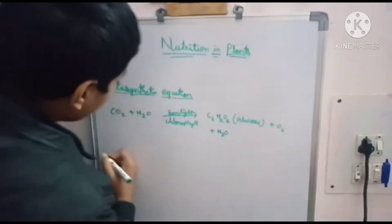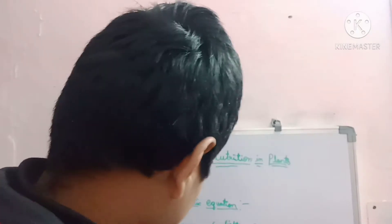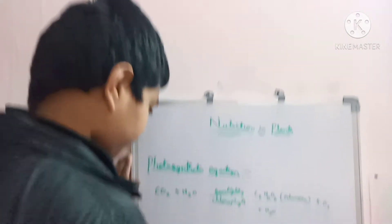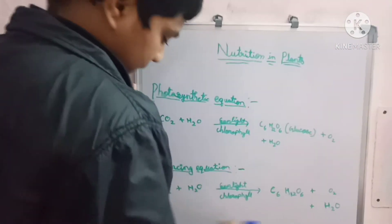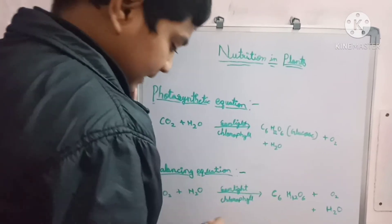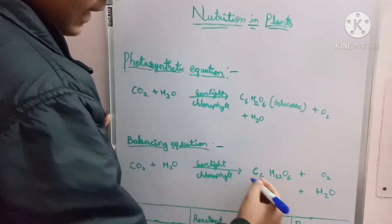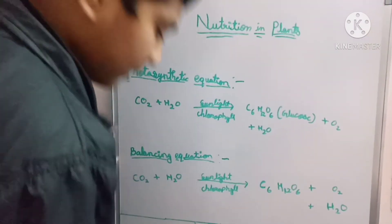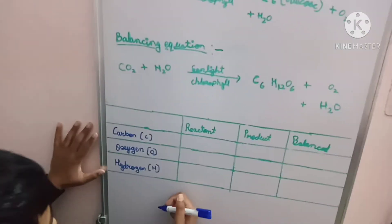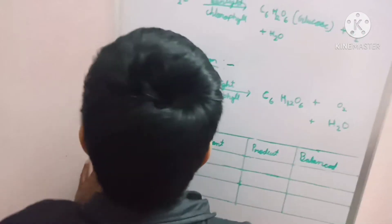Now we will see how to balance this equation. We write the whole equation again. This side is called the reactant side and this side is called the product side. Now we will see how many carbons there are.